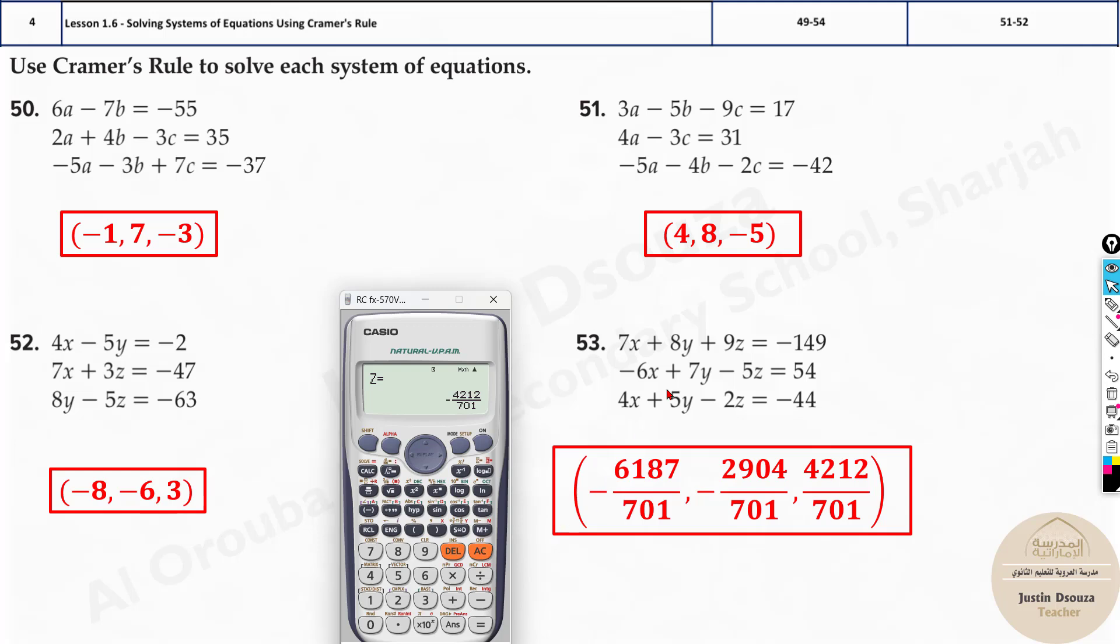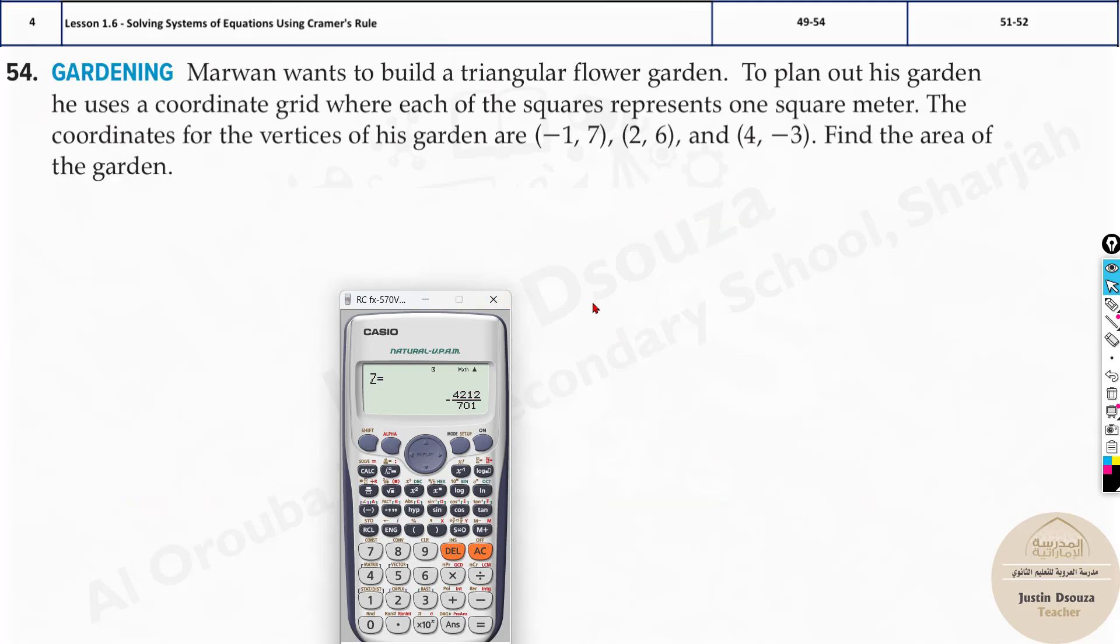So that's how we do it. If you do it using Cramer's rule, it's going to take a long time. But since this is the MCQ part, just do the shortcut methods. And here again, we have to find the area. Marwan wants to build a triangular flower garden. The coordinates are given.